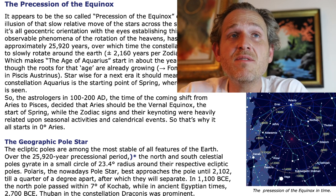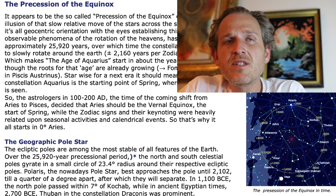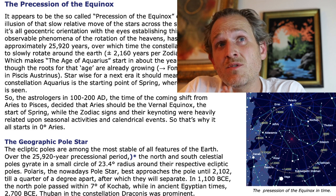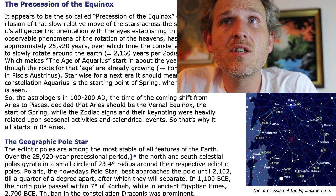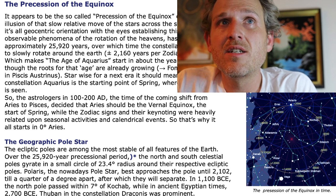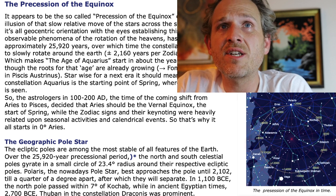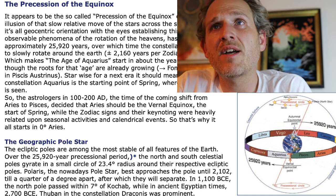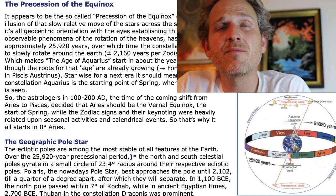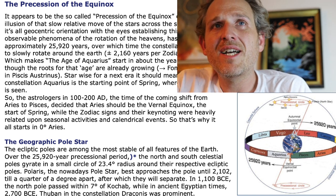With a cycle of approximately 25,920 years, over which time the constellations appear to slowly rotate around the Earth — plus or minus 2,160 years per zodiac sign, meaning it takes 2,160 years to get through one zodiac sign at this rate. Which makes the Age of Aquarius start in about the year 2600 Common Era, though the roots for that age are already growing. The real Age of Aquarius is starting some 500 to 600 years from now. Star-wise, for the next era, the constellation Aquarius would be the starting point of spring, where now Pisces is seen.